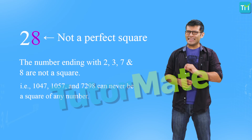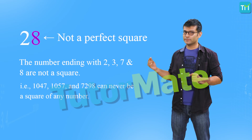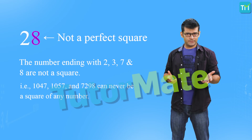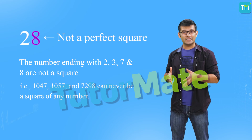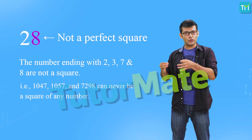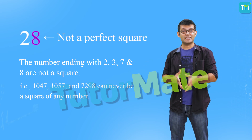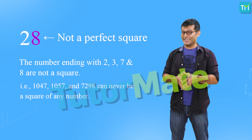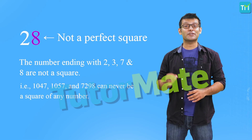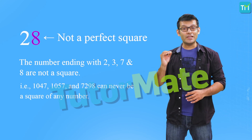But does that mean that every number ending in 0, 1, 4, 5, 6 or 9 will be a perfect square? Let's look at a number, say 301. We see that it's ending in 1. Now, we also know that the square of 17 is 289 while the square of 18 is 324. The number 301 lies in between 289 and 324. But since there is no natural number between 17 and 18, we can be assured that 301 is not a perfect square. So it means that not every number ending in the digits 0, 1, 4, 5, 6 or 9 will be a perfect square.